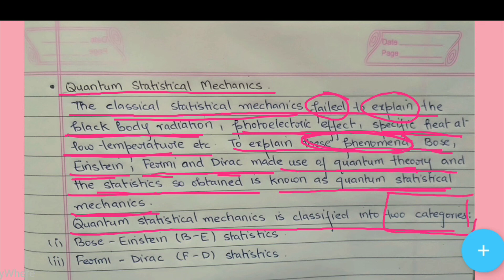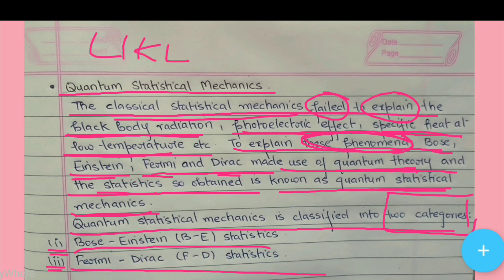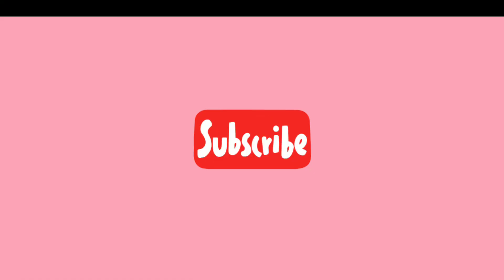Quantum statistics is further classified into two categories: the first is Bose-Einstein statistics, and the second is Fermi-Dirac statistics. If you liked this video, please give it a thumbs up and subscribe to this channel. Thank you very much for watching.